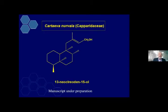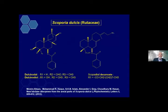Then from Katimba narpela, Capparidaceae family, we isolated a new diterpenoid compound, not yet published. Another is from Scoparia dulcis, Rutaceae family — we isolated three compounds, diterpenes with an ester form, and published in Phytochemistry Letters.